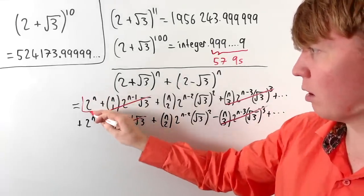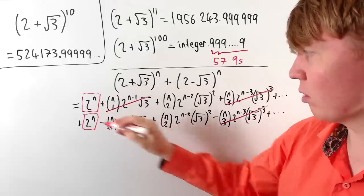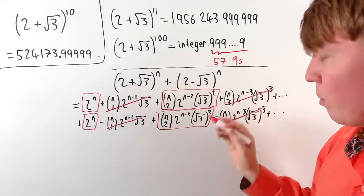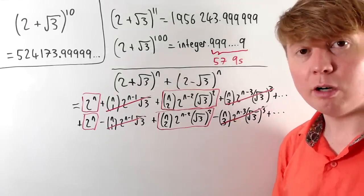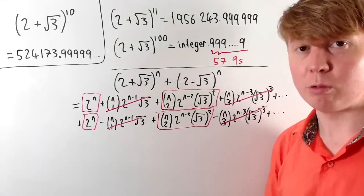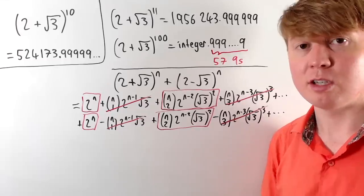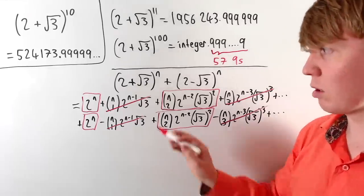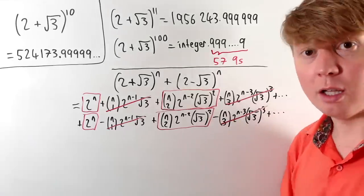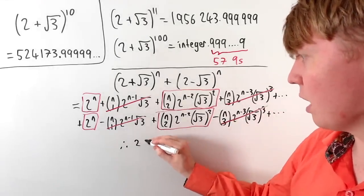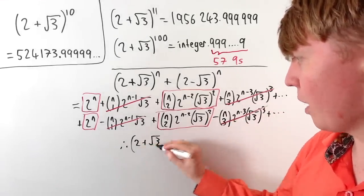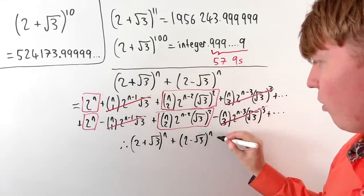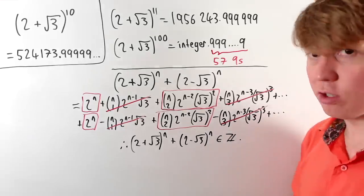All the terms containing odd powers of root 3 cancel between the two expansions, and all the terms with even powers of root 3 are integers. So all we're left with are integer terms: two copies of 2 to the n, and terms where root 3 appears to an even power — root 3 squared, root 3 to the 4th, root 3 to the 6th, and so on. We can therefore say with certainty that (2 plus root 3) to the n plus (2 minus root 3) to the n is an integer for any positive integer n.